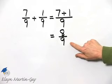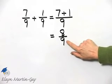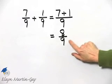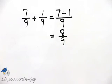Can this be simplified? The answer is no, because 8 and 9 have no common factors other than 1. So here is my sum in simplest form.